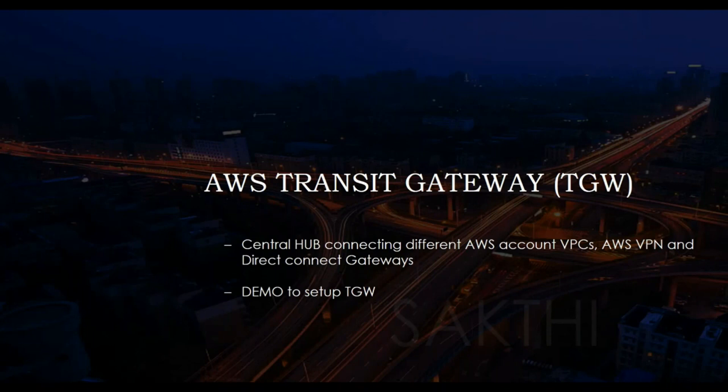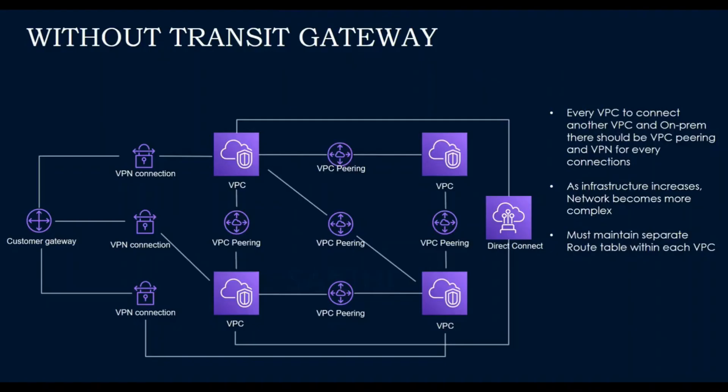A Transit Gateway is a central hub connecting different AWS account VPCs, AWS VPN and Direct Connect Gateways. Without Transit Gateway, for every VPC to connect to another VPC and on-premises, there should be a VPC peering and VPN connection for every connection.